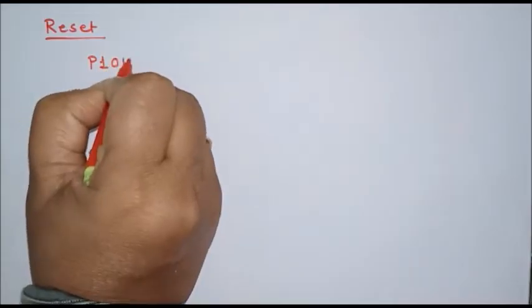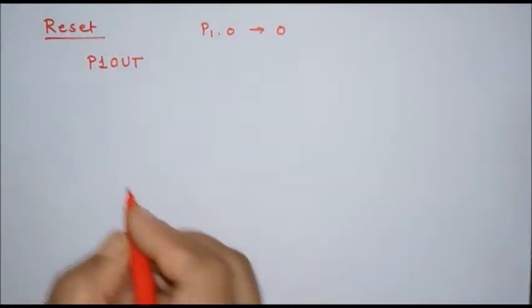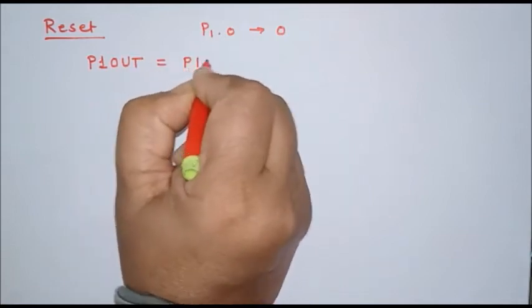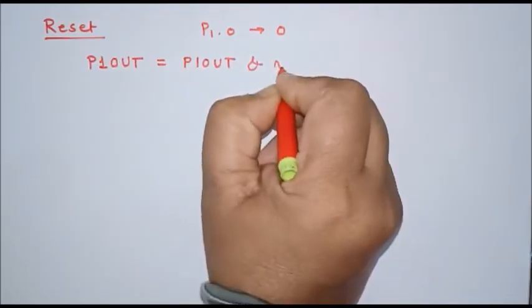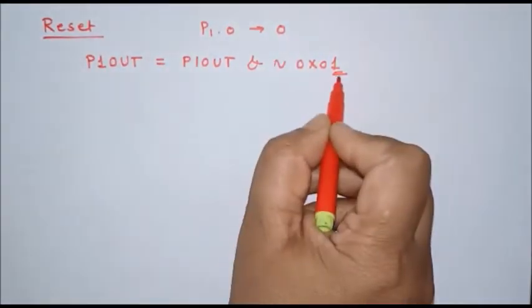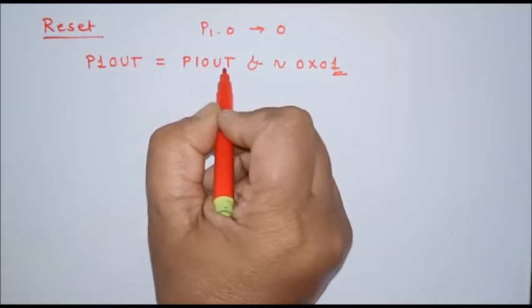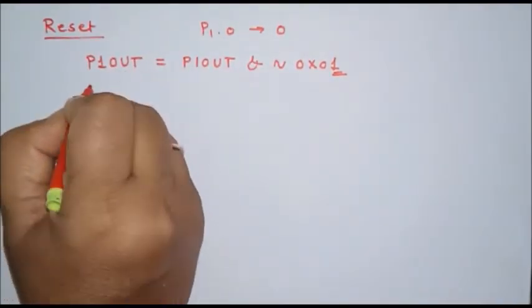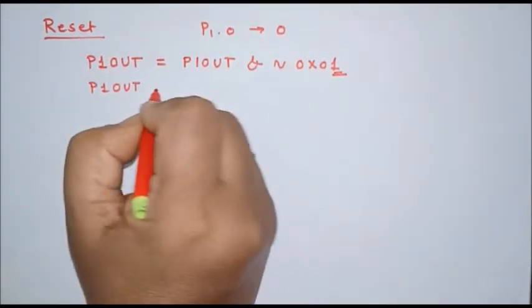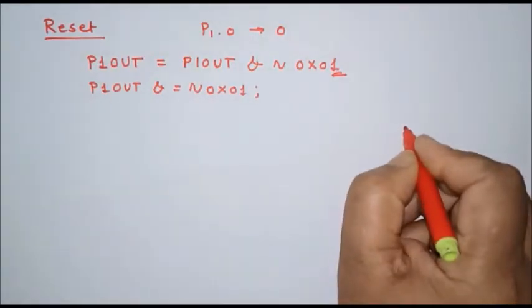To reset a particular bit, we have to perform an AND operation. For example, suppose we want to write logic 0 at p1.0 without changing the status of other bits. We have to perform: p1out AND with the complement of 0x01. We want to send logic 0 for this particular bit, so we first find the complement of this data and then AND it with the data stored in the p1out register, storing the result back in p1out. In short: p1out &= ~0x01.